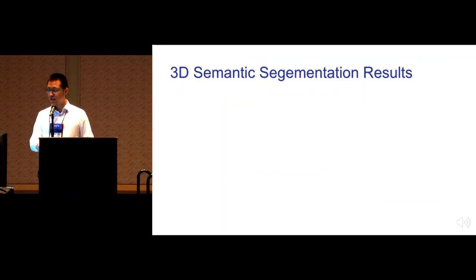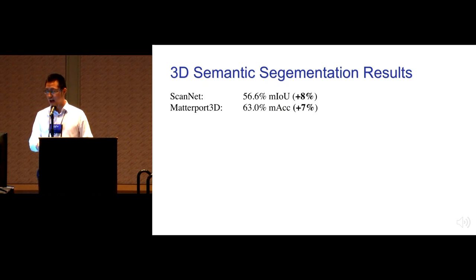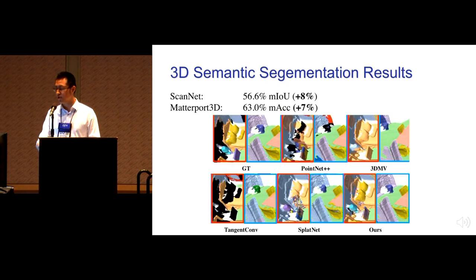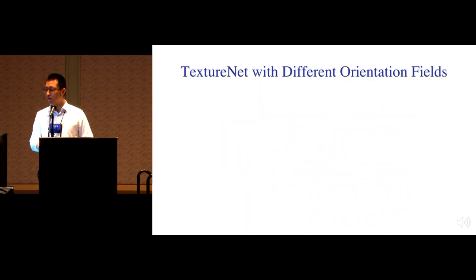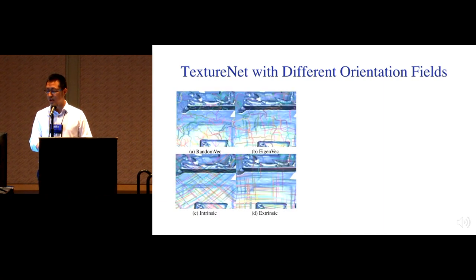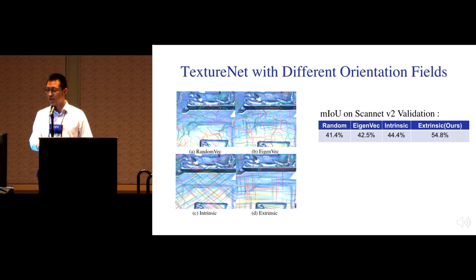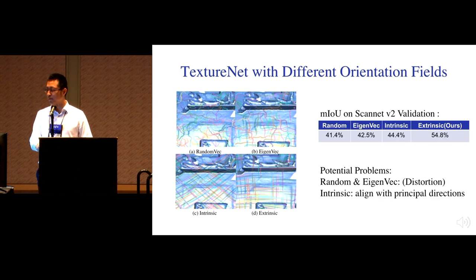We experimented our network on two datasets: ScanNet and Matterport3D, outperforming the state-of-the-art by 8% and 7% at submission. We are the only method that segments lamps, pillows, trash bins, and windows in our test examples. We also experimented with different orientation fields — random, eigenvector-based, intrinsic smooth — and our canonical 4-RoSe field performs best among them.